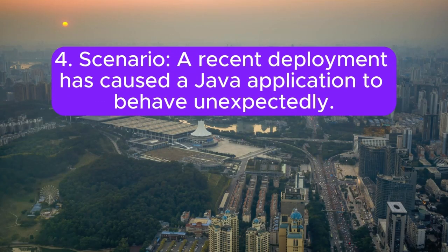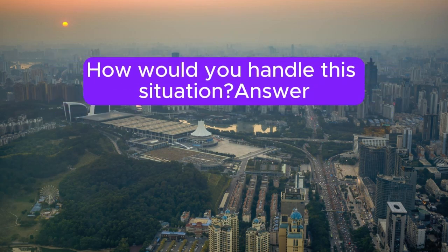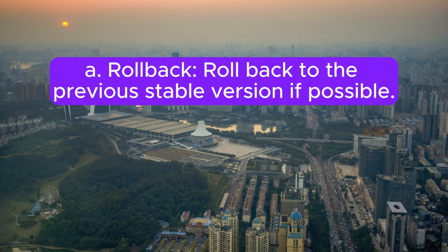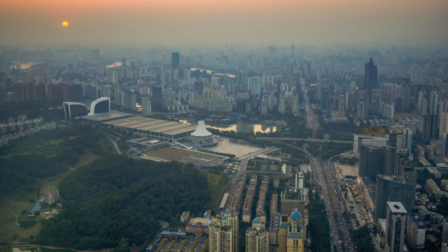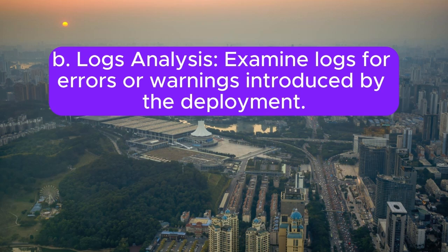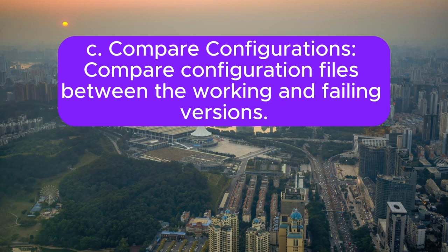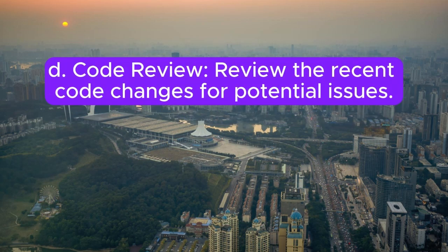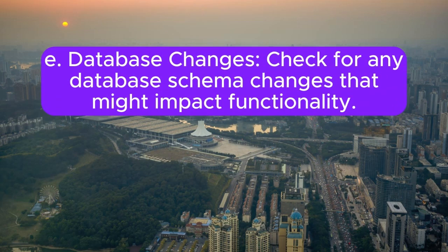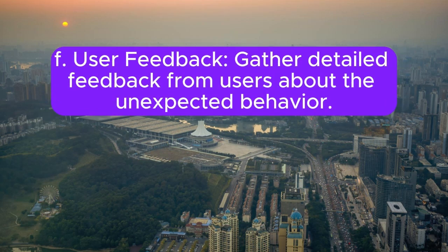Scenario 4: A recent deployment has caused a Java application to behave unexpectedly. How would you handle this situation? Answer: A. Rollback — roll back to the previous stable version if possible. B. Logs analysis — examine logs for errors or warnings introduced by the deployment. C. Compare configurations — compare configuration files between the working and failing versions. D. Code review — review the recent code changes for potential issues. E. Database changes — check for any database schema changes that might impact functionality. F. User feedback — gather detailed feedback from users about the unexpected behavior.